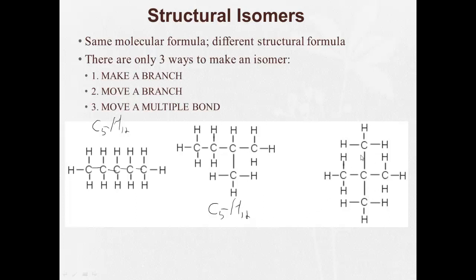How many carbons? 1, 2, 3, 4, 5, C5. H1, 2, 3, 4, 5, 6, 7, 8, 9, 10, 11, 12. So if we simply just wrote the molecular formula, these will all be the same.